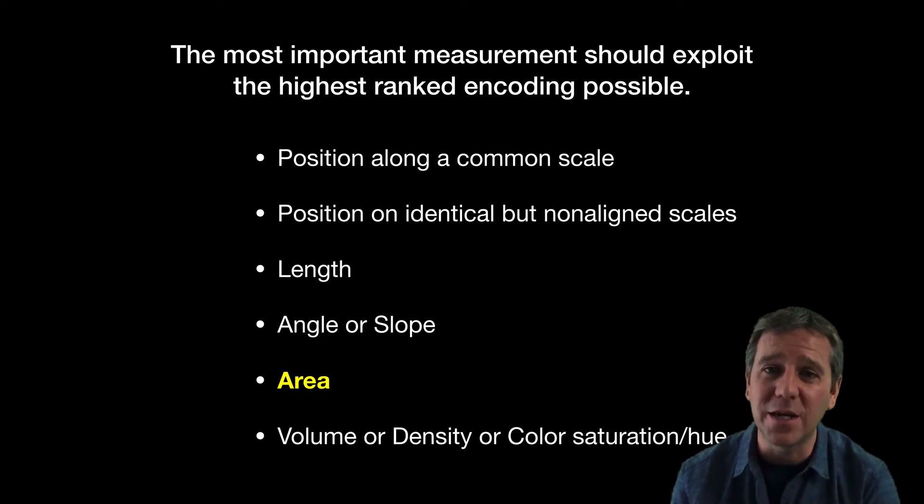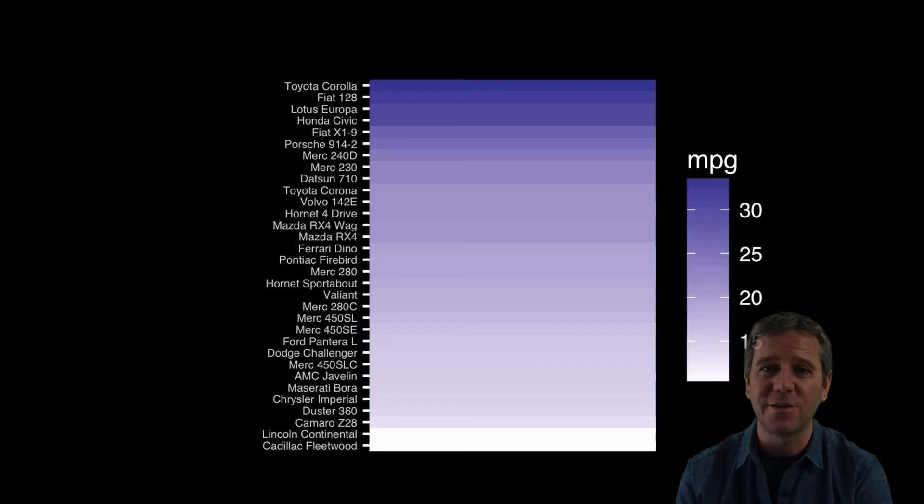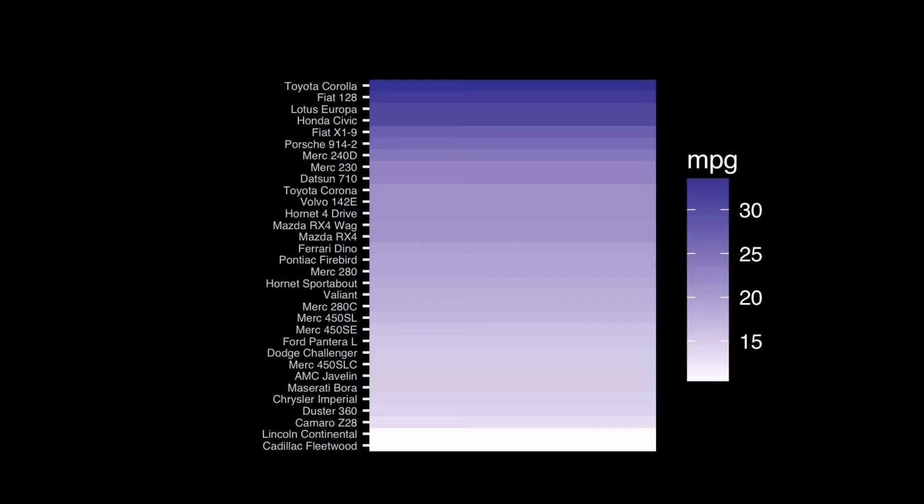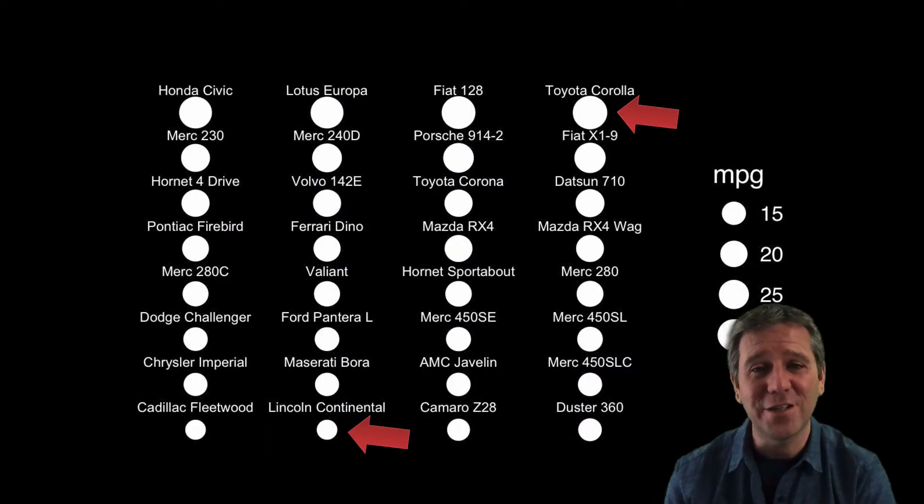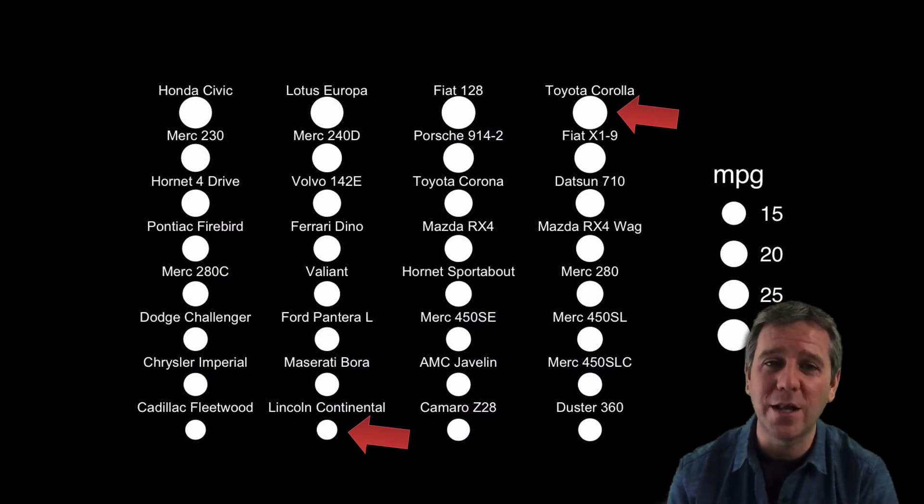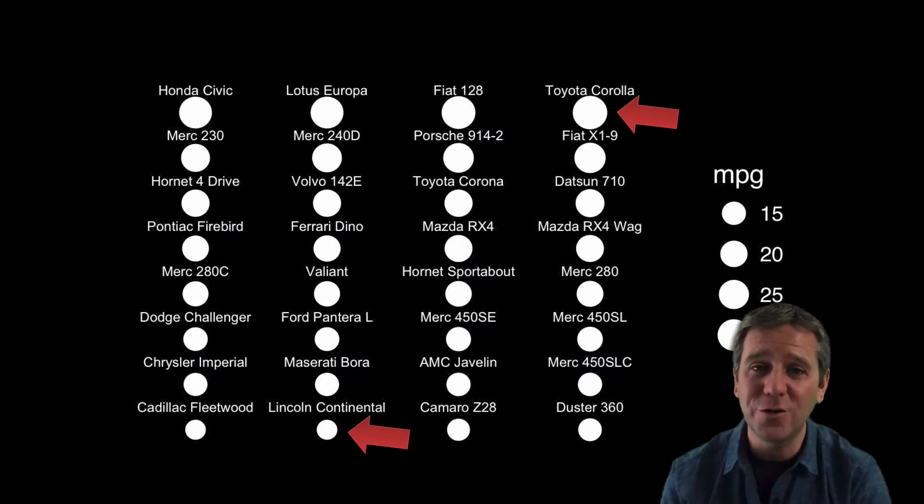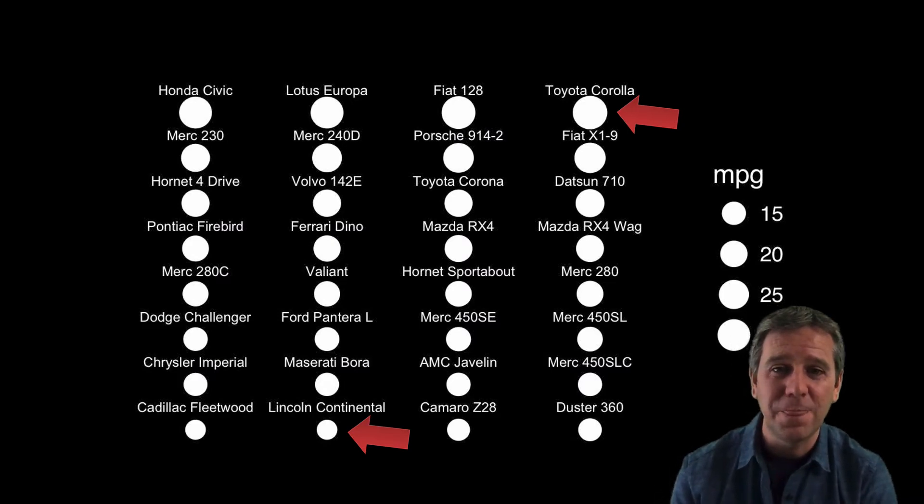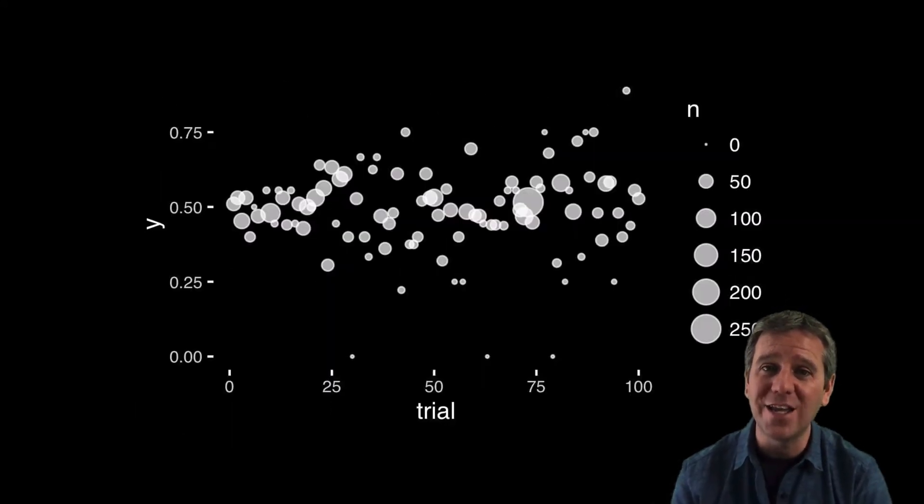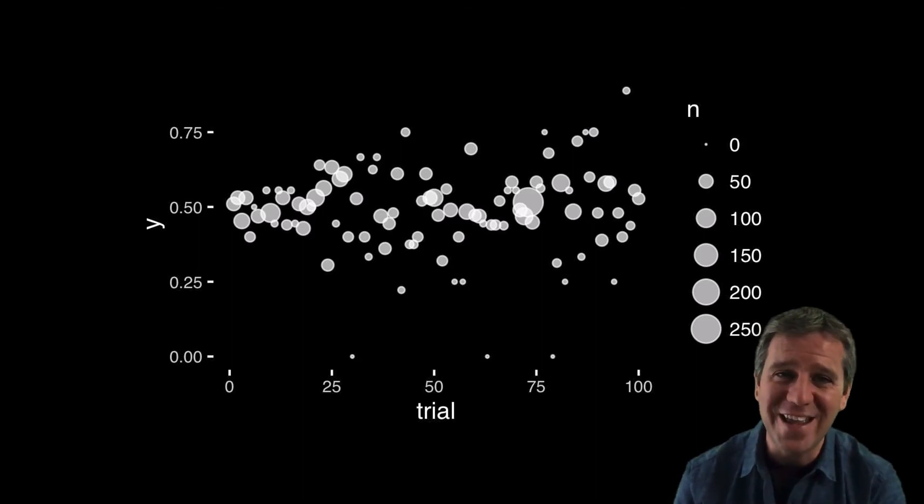That's about as good as I can make this plot, so let's move up the list to area. We can represent this same data with bigger or smaller area like this. Here bigger area means more miles per gallon, and I've ordered them by miles per gallon so I can tell the Corolla beats the Lincoln.